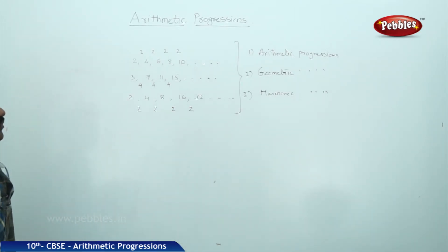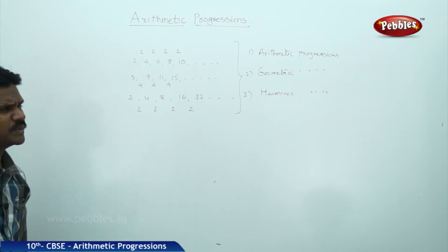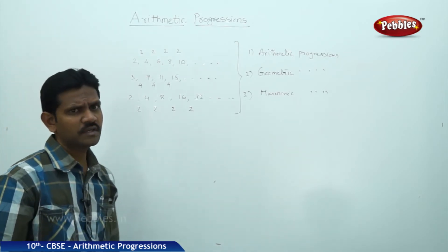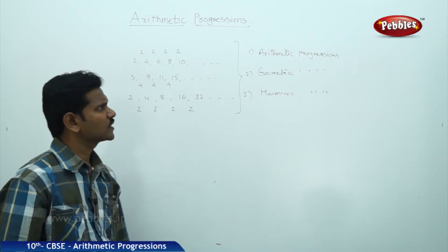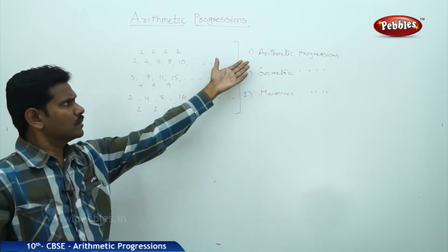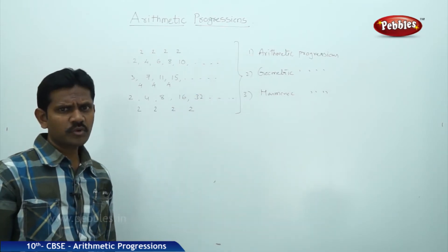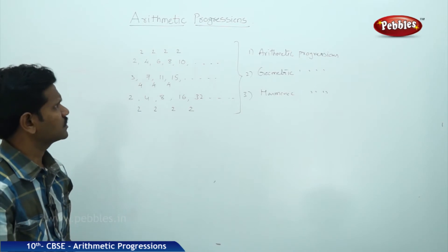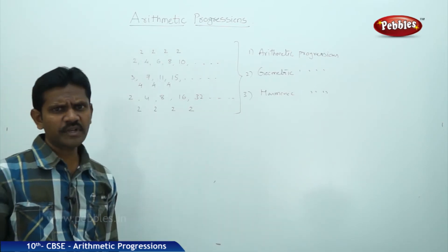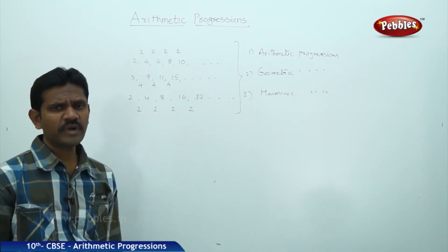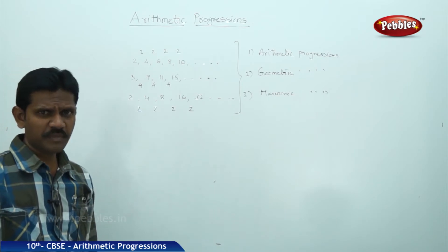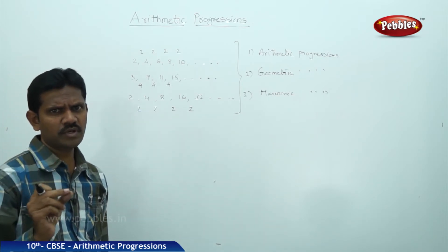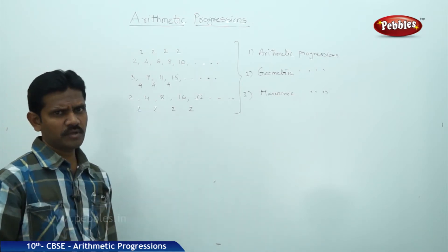Now we will learn in detail what is meant by arithmetic progressions. An arithmetic progression is a progression in which every term is obtained by adding or subtracting a fixed number to its preceding number.